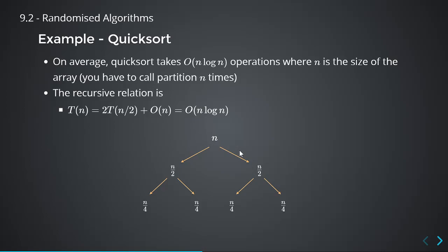We're not going to derive that — it's pretty hard, but you can look for it in CLRS. On average, the array is expected to be partitioned into two parts of roughly equal length. So like merge sort, you have n at the top level, n/2 on the second, n/4 on the next, and so on — that's n levels of log n, giving O(n log n). That's the recursive formula.